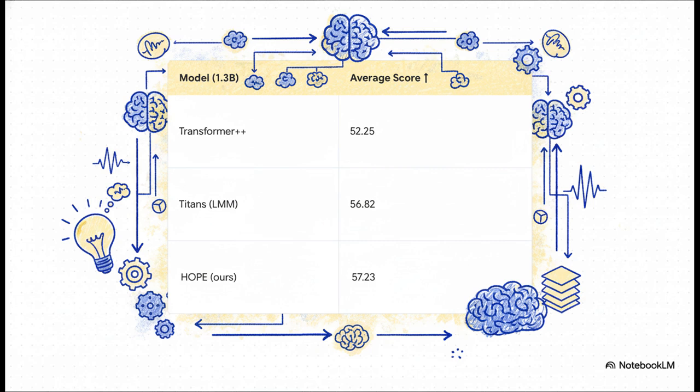Well, the proof is right here in the data. This table shows how different models of the same size performed on a bunch of common-sense reasoning tasks. And look at the results. Hope comes out on top. It outperforms other advanced architectures. Now, that higher average score, that's the concrete evidence we're looking for. It shows that this new, multi-level way of thinking actually leads to smarter, more capable models.